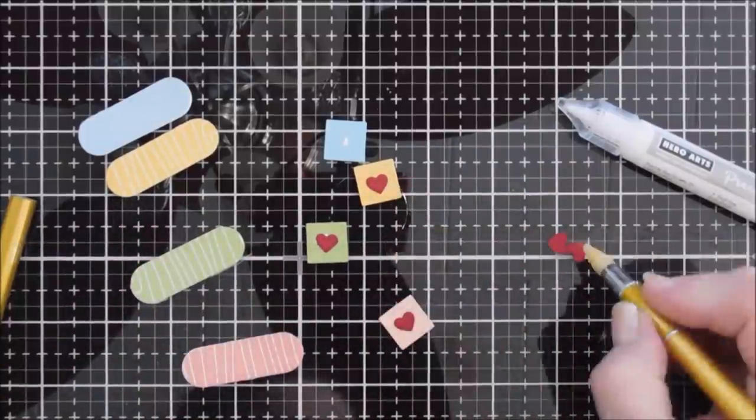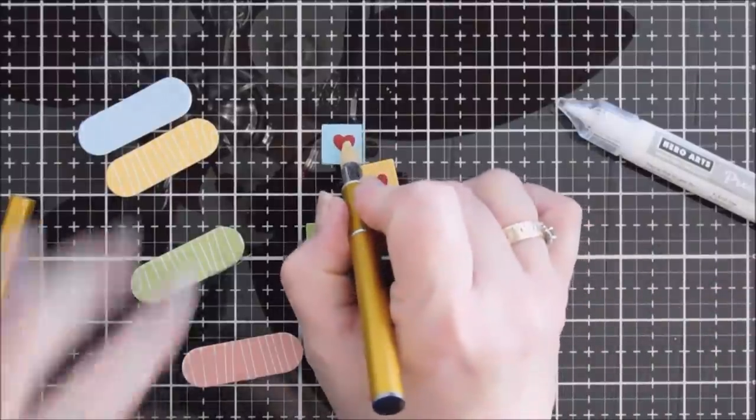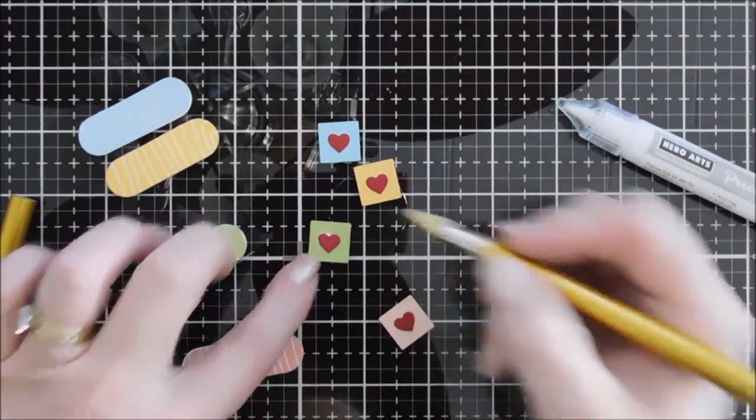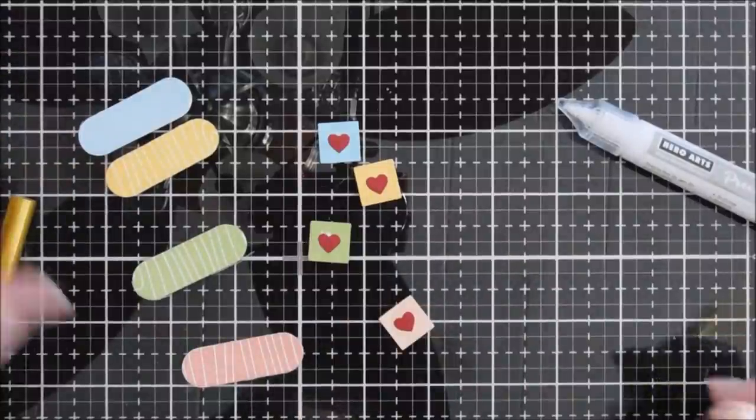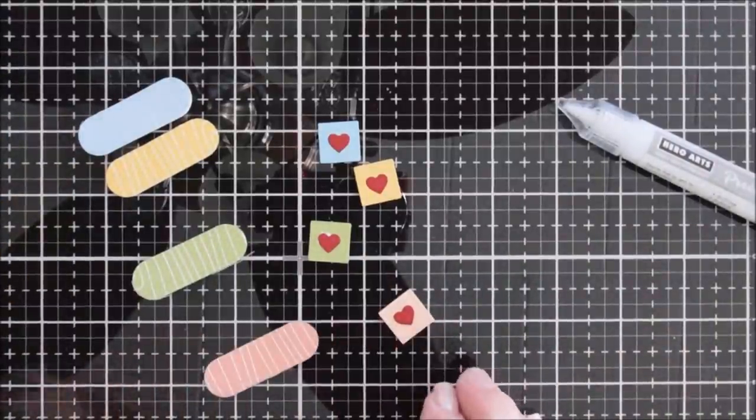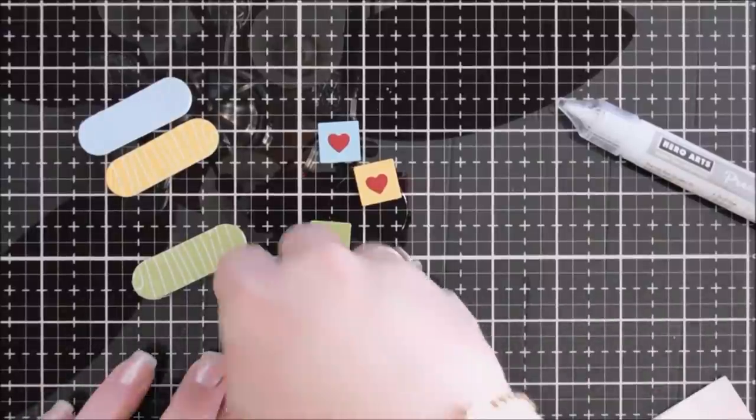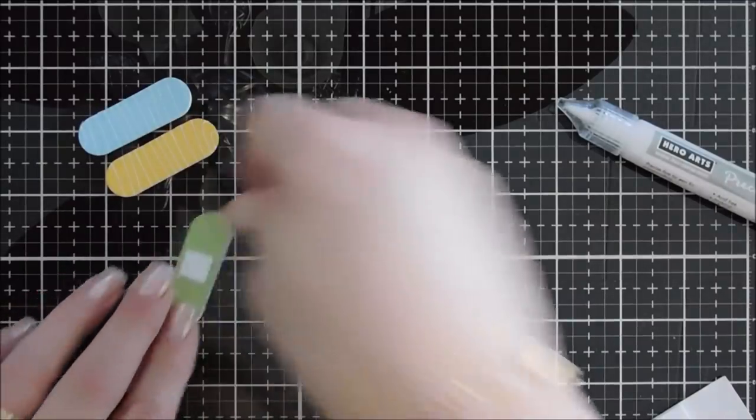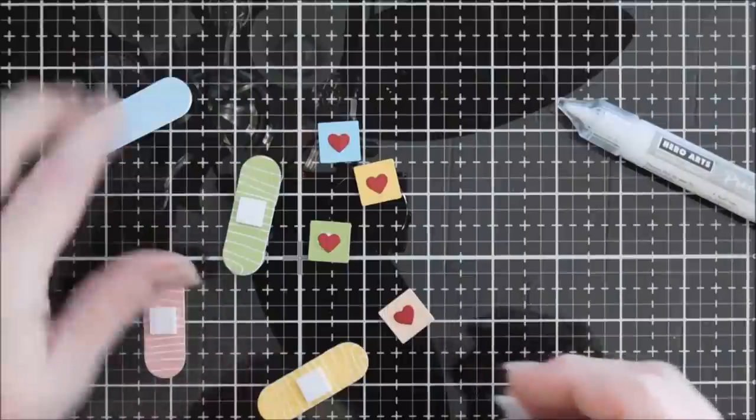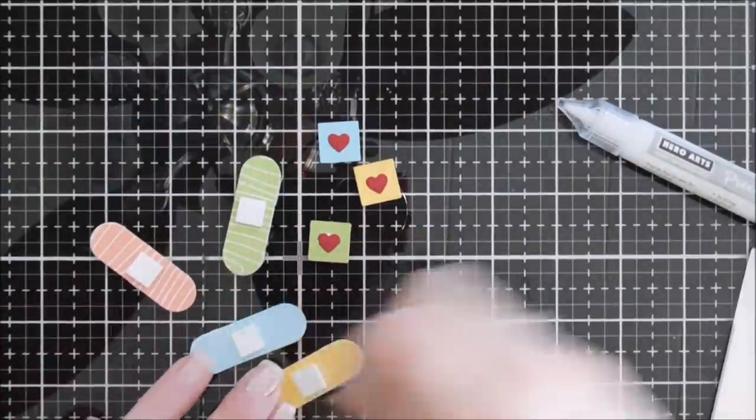Now once I have my hearts adhered I'll take some foam squares and rather than flipping over each one of these little pieces, I have one extra. I went a little crazy with my little heart but that's okay. I'm going to put foam adhesive on the center of my band-aid. I have some foam squares and we'll just tack that down to the center. There is embossed detail to show where to put those little squares.